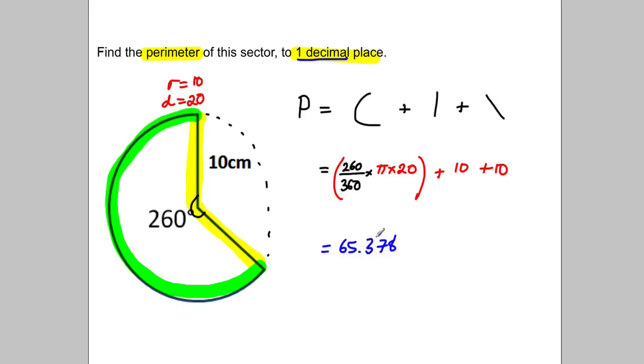If I'm rounding to one decimal place, I would consider the second decimal place. Because that's a 7, I'll round up, so it'd be 65.4, and the unit is centimeters.